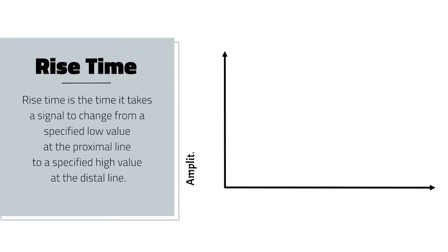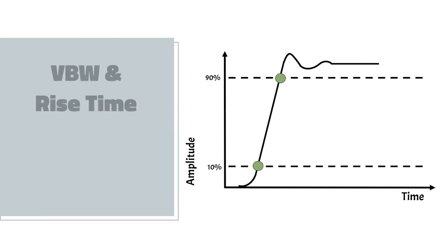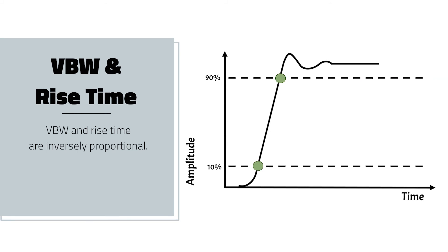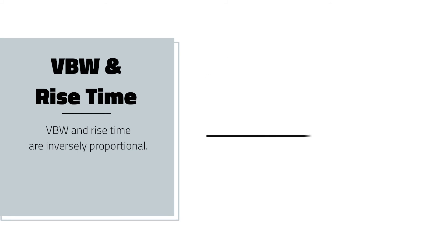Another important parameter, known as rise time, is the time it takes a signal to change from a specified low value at the proximal line, which is 10% of the pulse magnitude, to a specified high value at the distal line, which is about 90% of the pulse magnitude, according to IEEE. Video bandwidth and rise time are inversely proportional, with their rule-of-thumb relationship defined as bandwidth equals 0.35 divided by the rise time of the detection circuit.